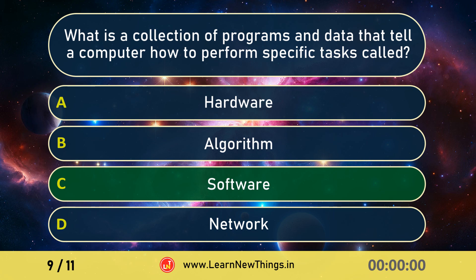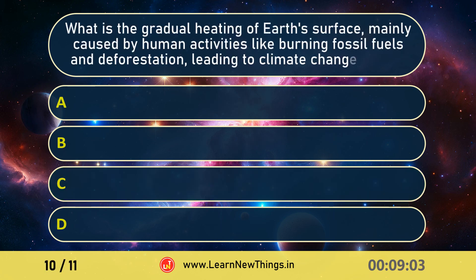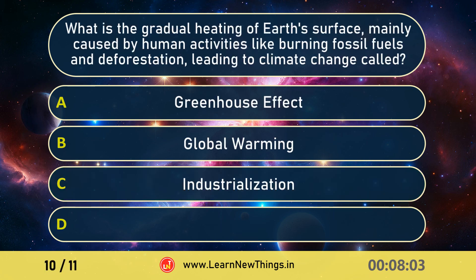What is the gradual heating of Earth's surface mainly caused by human activities like burning fossil fuels and deforestation, leading to climate change, called? Global warming.